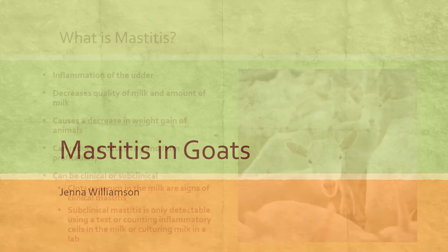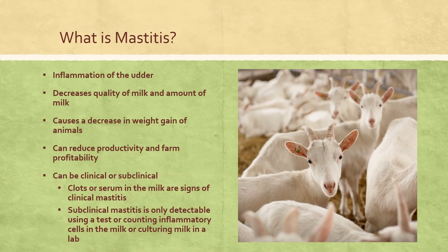Mastitis is the term used to describe inflammation of the mammary glands, which may be caused by a number of different microorganisms — mostly bacteria, but it can also be caused by viruses, fungi, and also by injury to the udder. Of particular importance in dairy goats, mastitis can develop in any type and breed of doe.